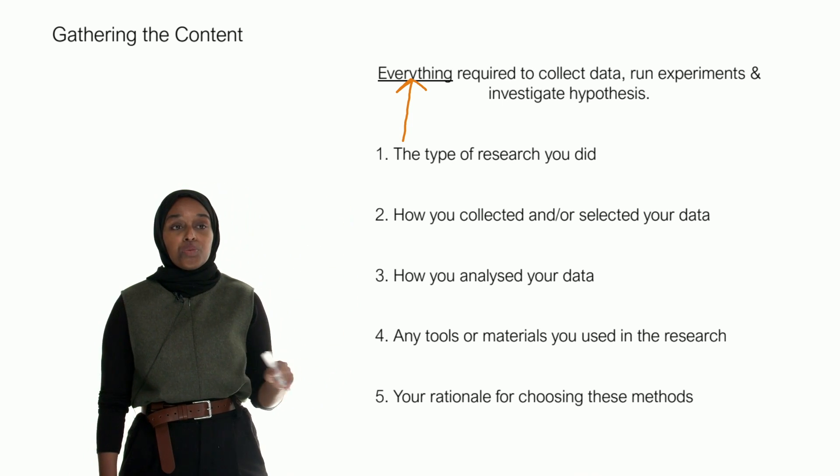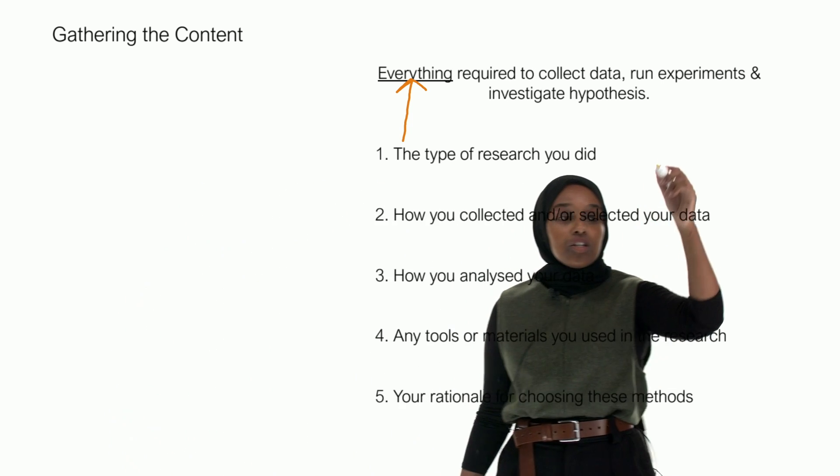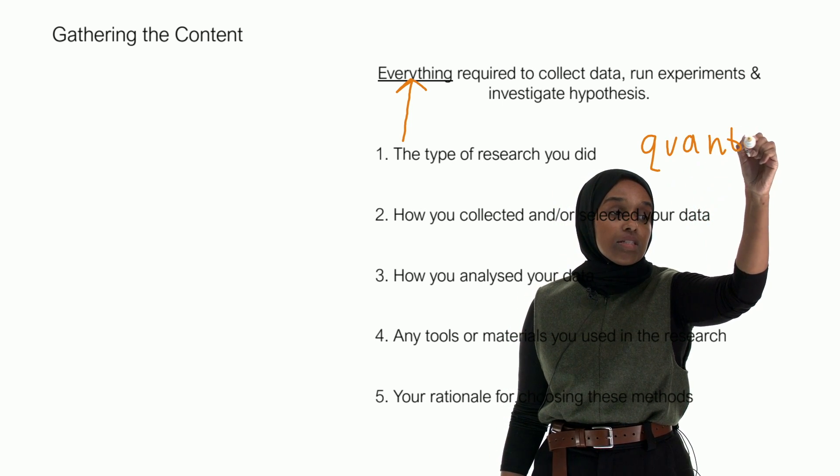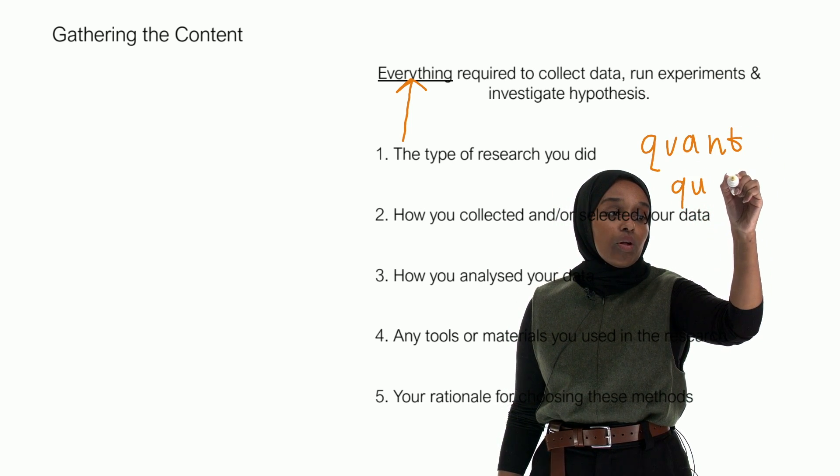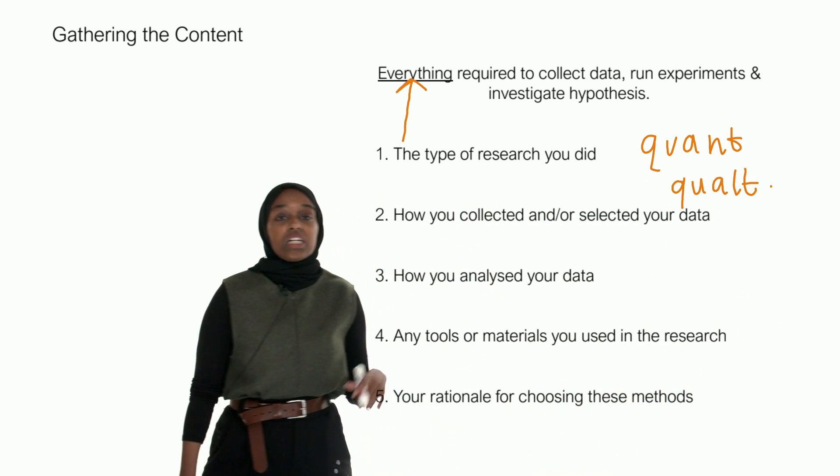These are the things you want to include in this chapter. Firstly, the type of research that you did—whether your research is quantitative or qualitative. There's a distinct difference between them, so you need to think about what kind of research you're doing.